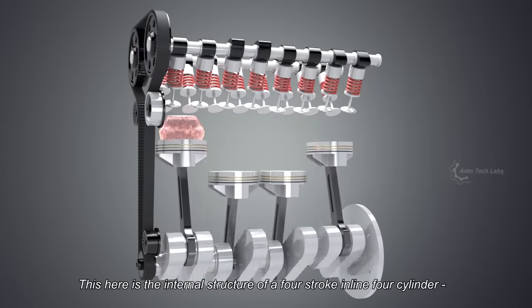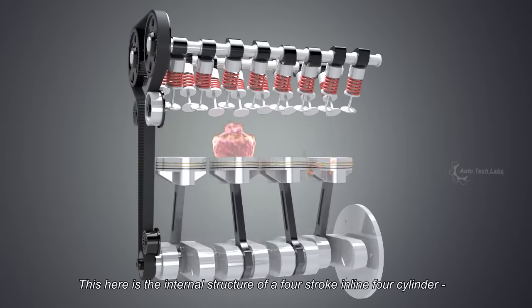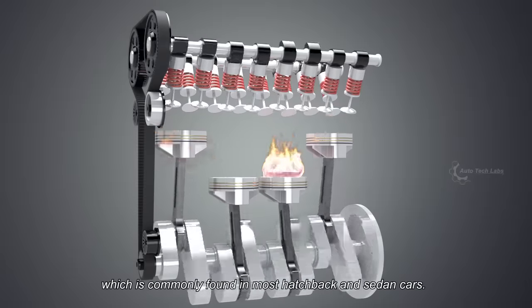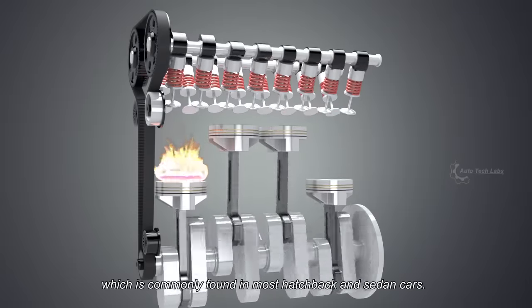This here is the internal structure of a 4-stroke inline 4-cylinder DOHC engine, which is commonly found in most hatchback and sedan cars.